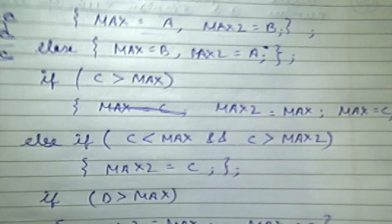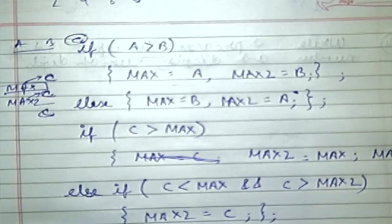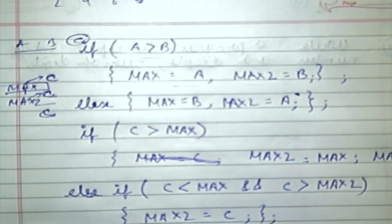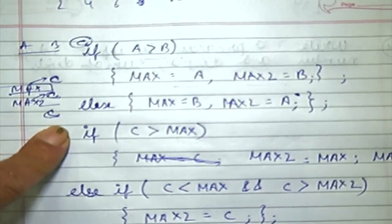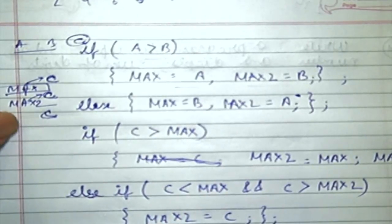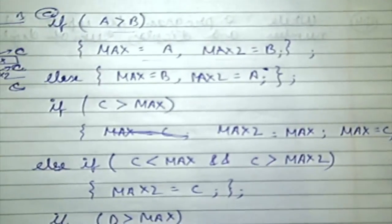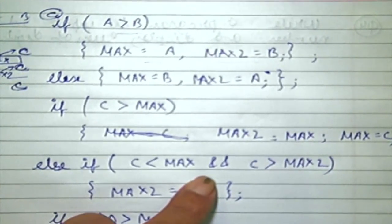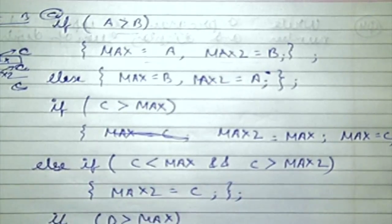Here is another effort. If A greater than B, max equals A, max two equals B. Else, max equals B, max two equals A. A simple initialization: two numbers are read and depending upon which is greater, they are assigned appropriately. The next number C is read. If C is greater than max, max two is made equal to max and max is assigned the value C. Else, if C is less than max but greater than max two, then max two is set to C.